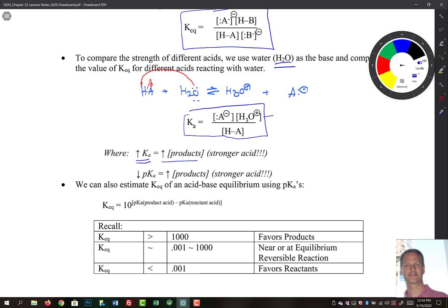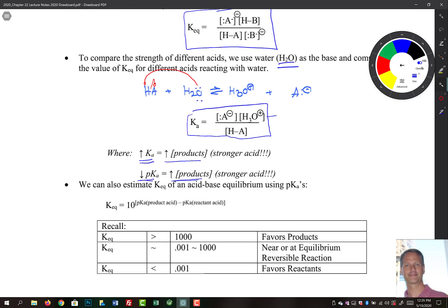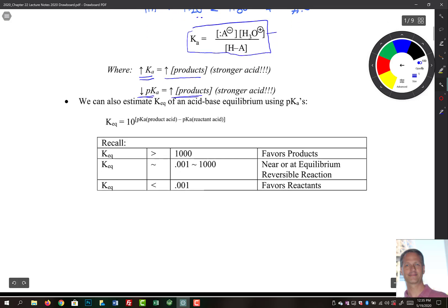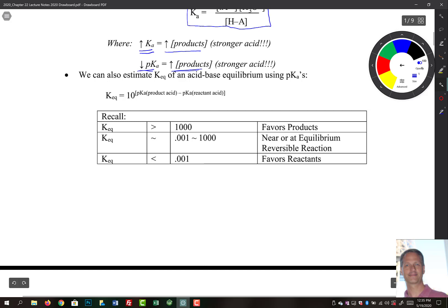But in OCHEM we usually look at pKa's. So pKa's make large Ka's become smaller pKa's. So a small pKa indicates that we favor our products. We have a stronger acid. And so our Keq here is equal to 10 raised to the difference of the pKa of the product acid minus the pKa of the reactant acid. Now Keq can be large or small or kind of intermediate. So if it's greater than about a thousand we say we favor our products. If it's less than one thousandth then we favor our reactants. And then if it lies between these two then we say it's near or at equilibrium.